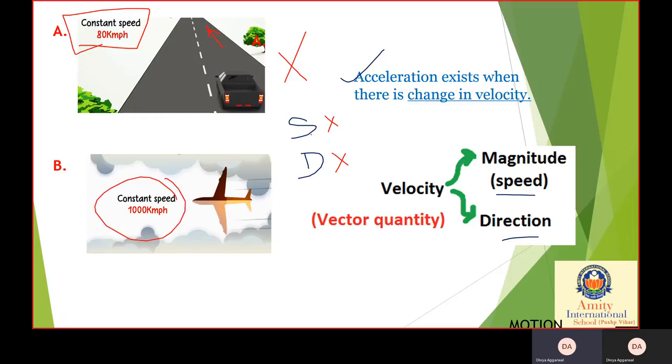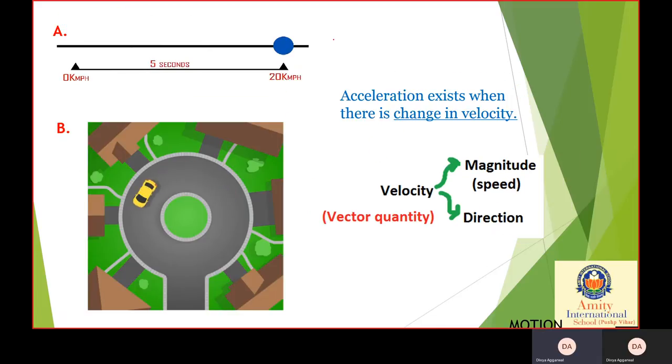Now let's see case two. There is a constant speed again. So in case two, the speed is not changing. Now what about the direction? For now the direction which can be seen here is a straight line, so the direction is also not changing. We can say that in both of these cases, since there is no change in the velocity, there is no acceleration that is happening.